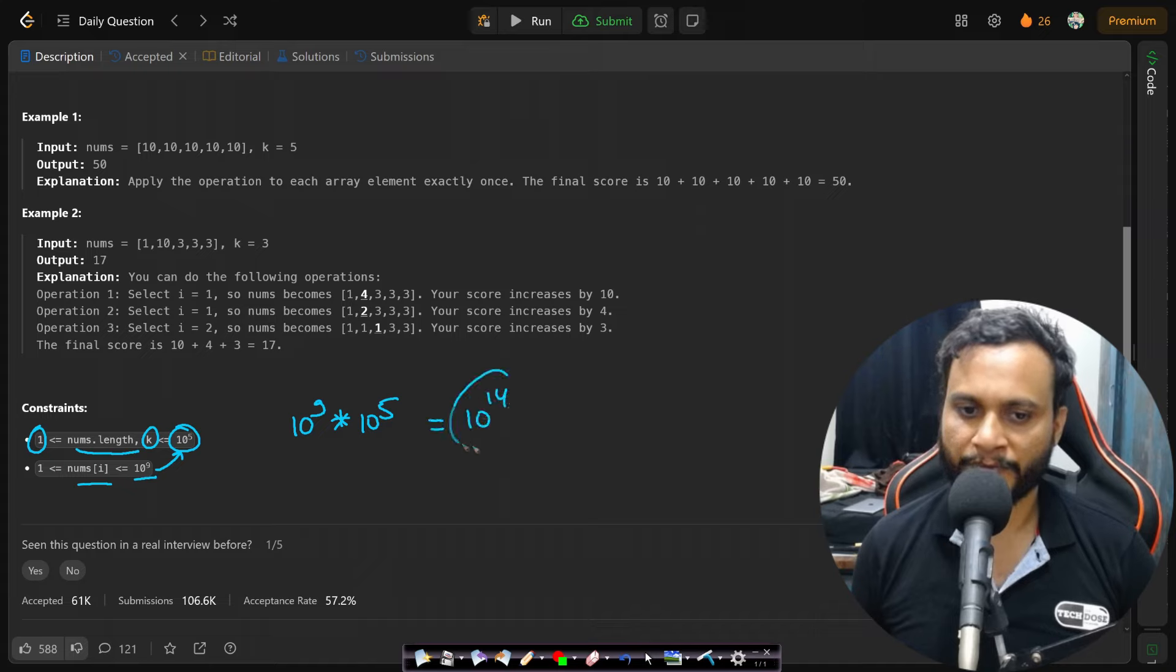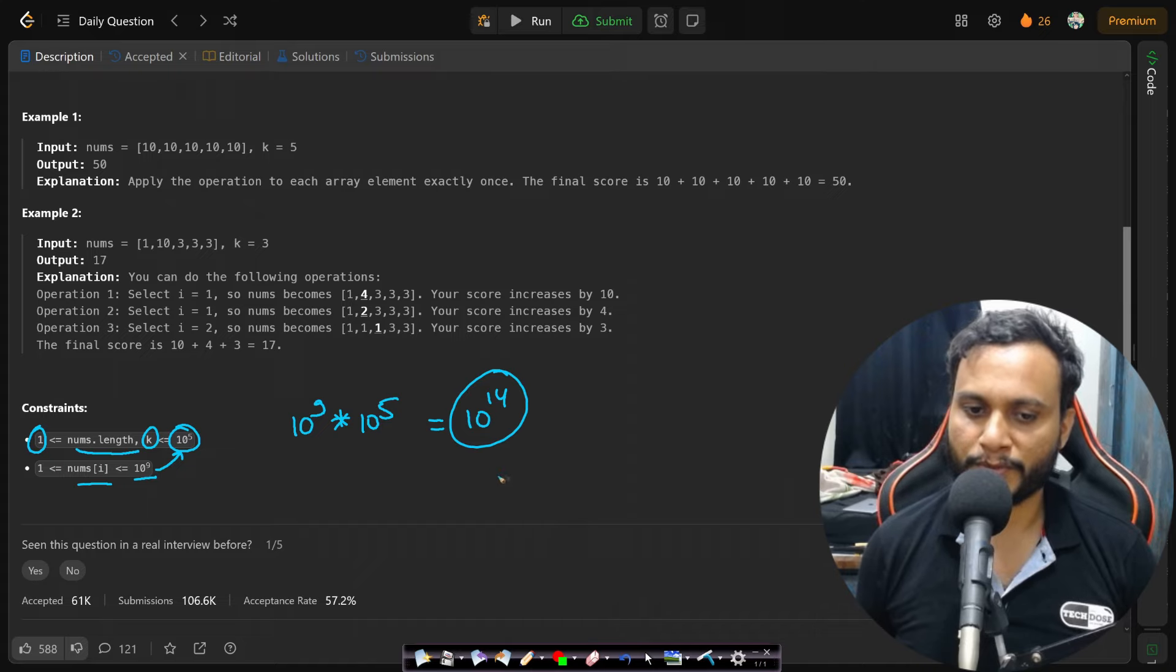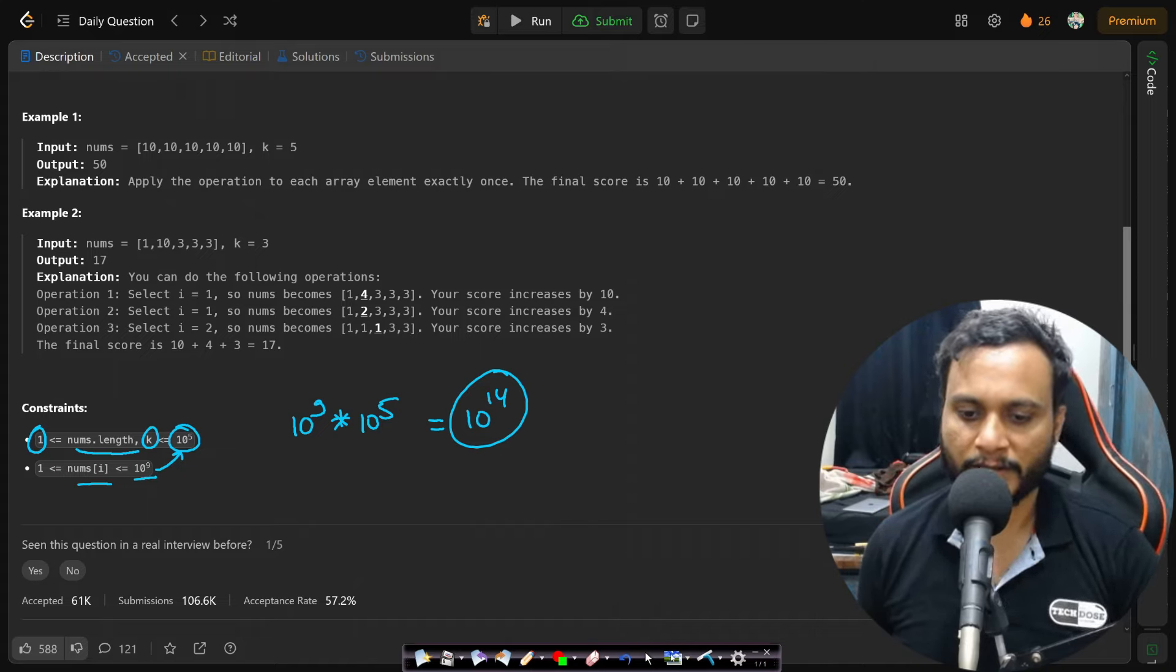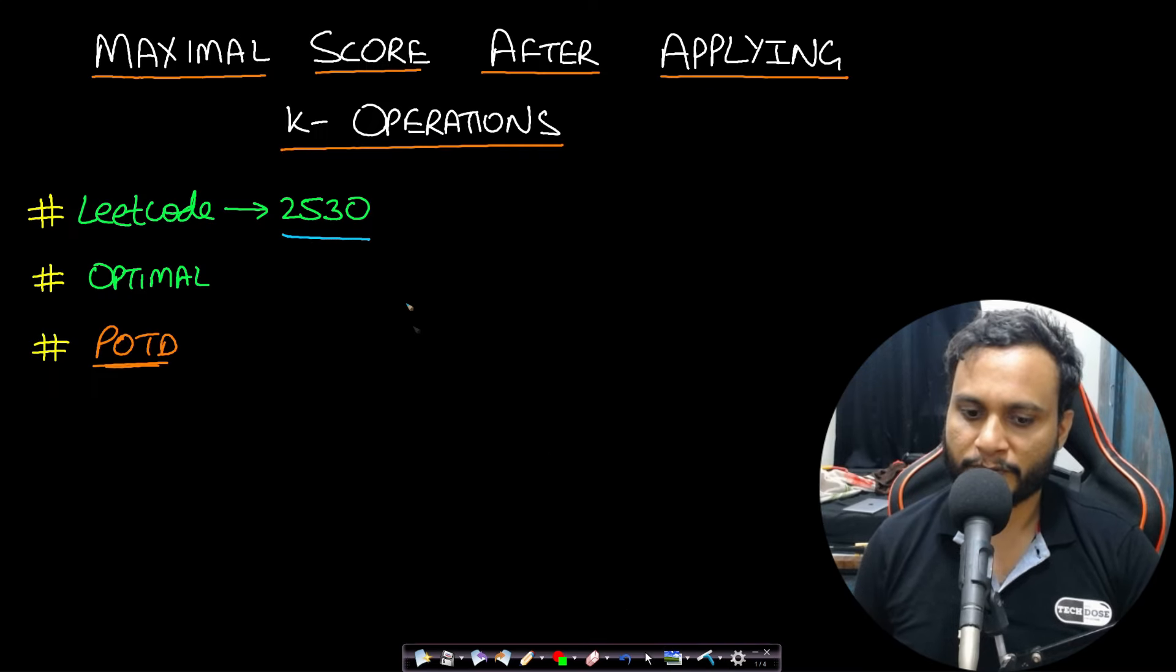Definitely you know that it is outside of 32-bit integer. So we will take long long integer which is a 64-bit integer in this case. Now let's look at some examples for better understanding.